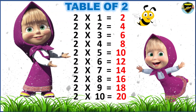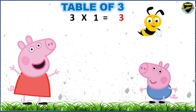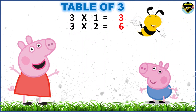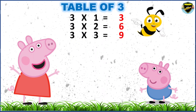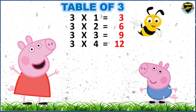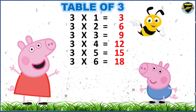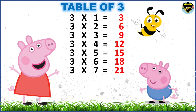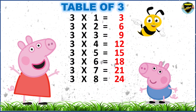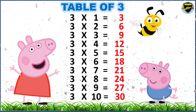Now, let's learn the table of three. Three ones are three. Three twos are six. Three threes are nine. Three fours are twelve. Three fives are fifteen. Three sixes are eighteen. Three sevens are twenty-one. Three eights are twenty-four. Three nines are twenty-seven. Three tens are thirty.